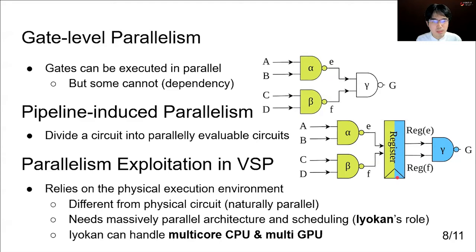These parallelisms are trivial in physical circuits, since physical logic gates are naturally evaluated in parallel. However, exploiting them in circuits over FHE is not trivial. Because we rely on the physical execution environment to evaluate the logic gates, the number of parallel evaluable logic gates is limited by the physical machine capability, like the number of cores in the CPU. So, efficient scheduling to fully utilize the capability is needed.